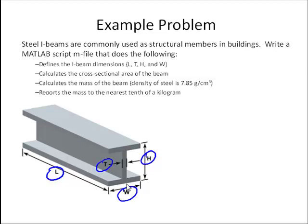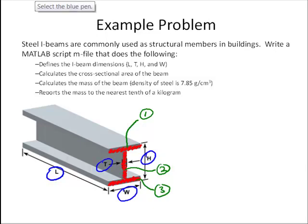So before we go to MATLAB, one thing we need to do is figure out how to do these calculations. So if we want to calculate the cross-sectional area of the beam, we can recognize that what we have here is this area that we're going to calculate, and we have three rectangles. Let's call this rectangle 1, and this one rectangle 2, and this one rectangle 3.